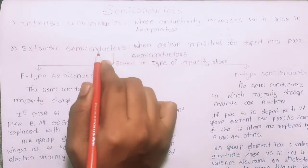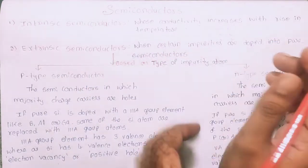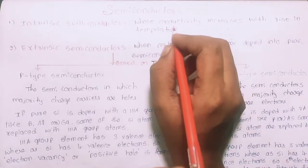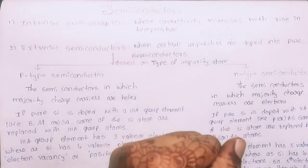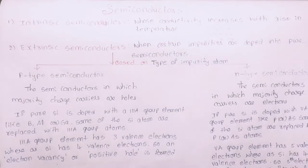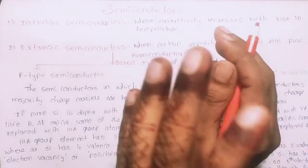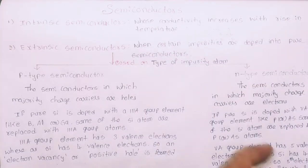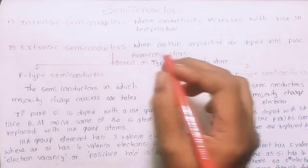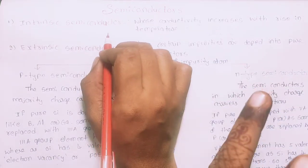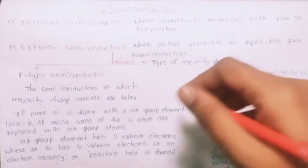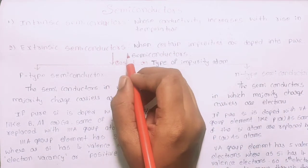For extrinsic semiconductors, at normal room temperature — for example, when we use a TV — conductivity is needed at any single temperature. So we use extrinsic semiconductors, which use impurity atoms added to pure semiconductors like silicon.